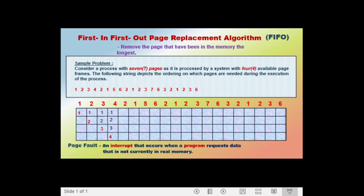The next page called is page 2. The frames now contain pages 1, 2, 3, and 4. Page 2 is already in the frame, so calling page 2 does not cause a page fault. The next page called is page 1. Page 1 is also still in the frame, so calling page 1 does not cause a page fault either.